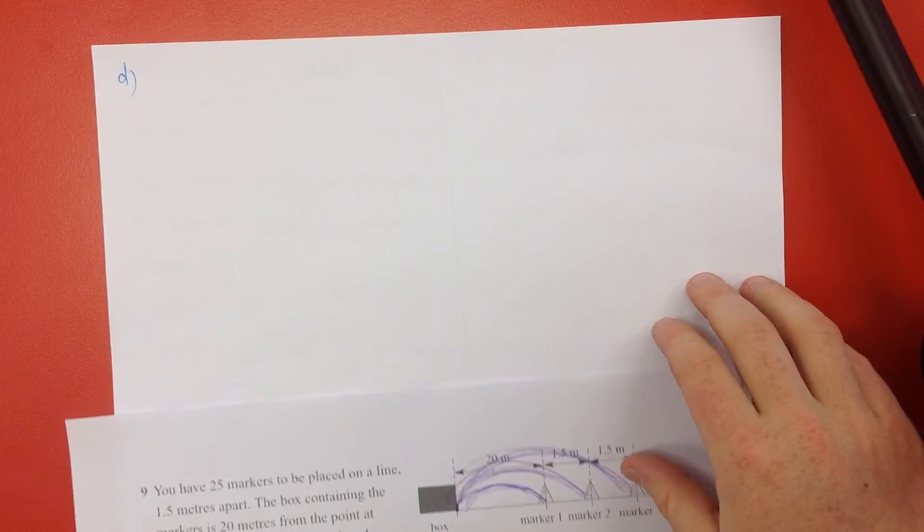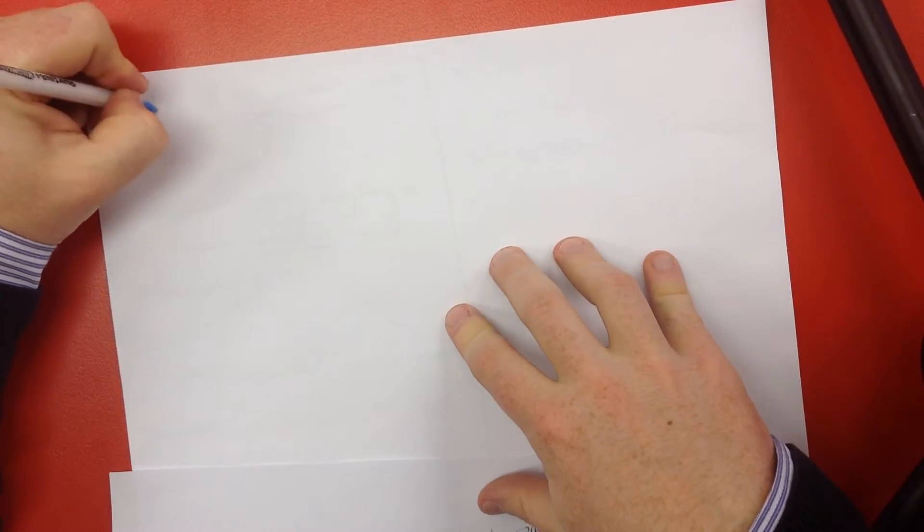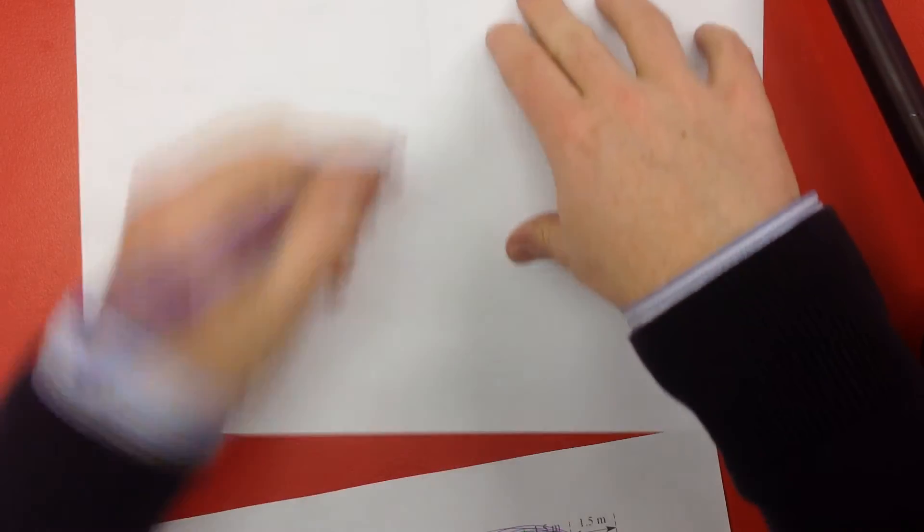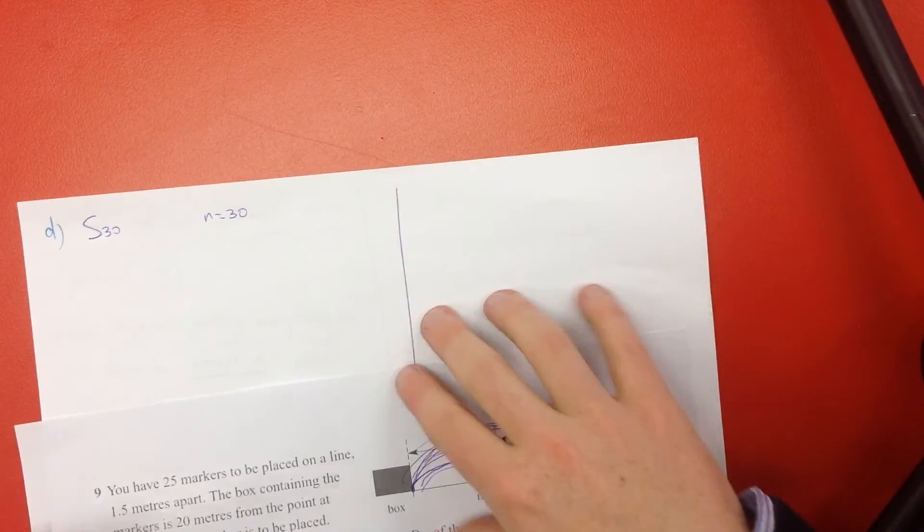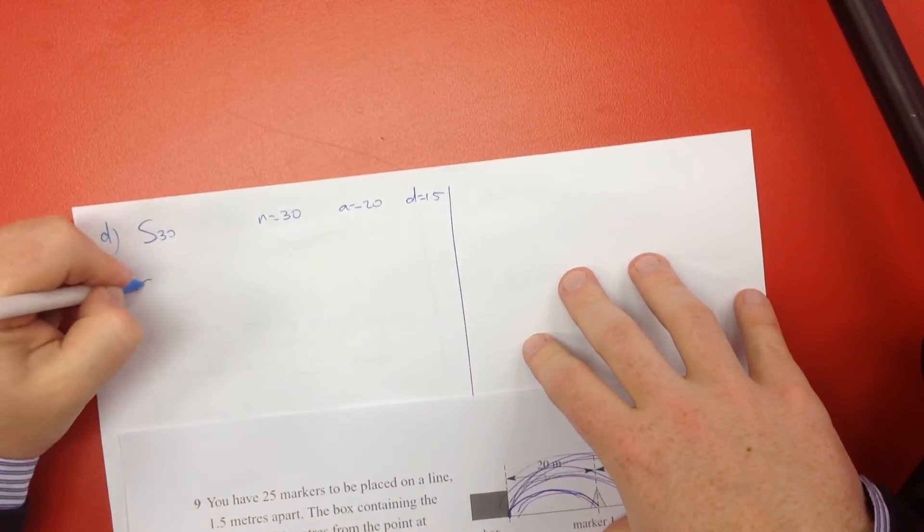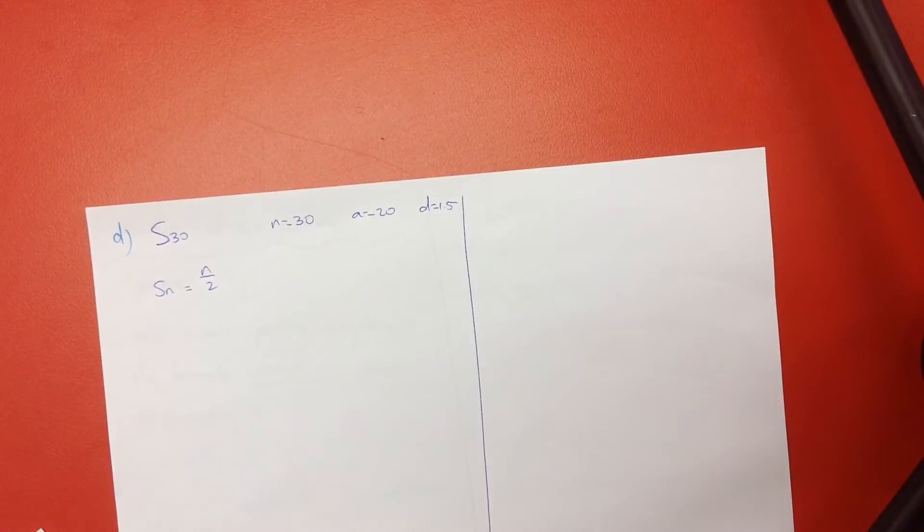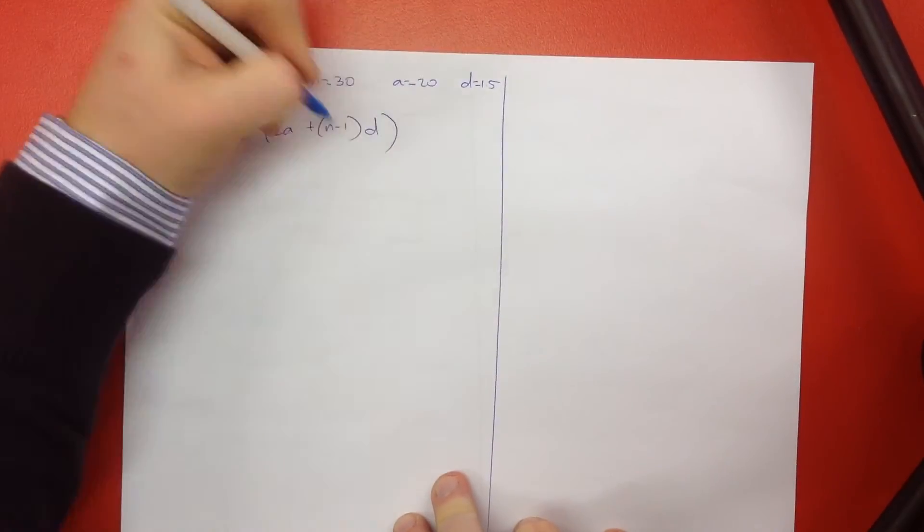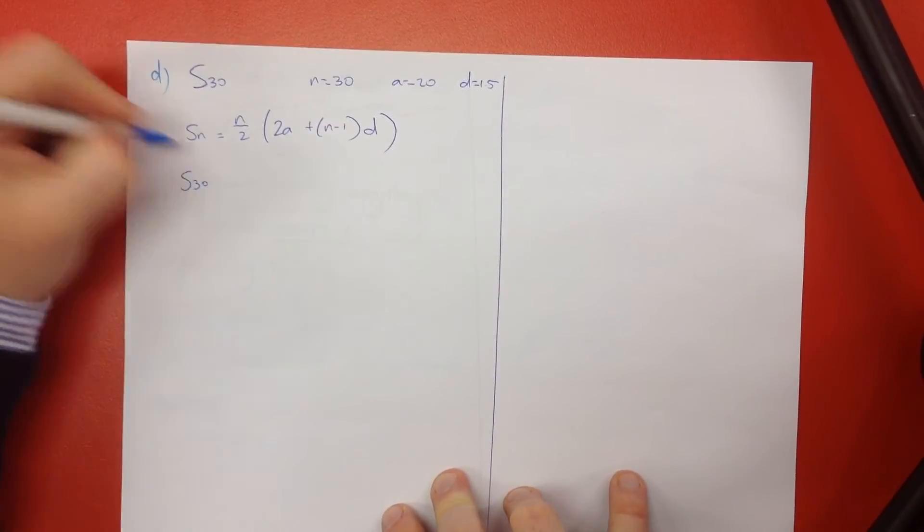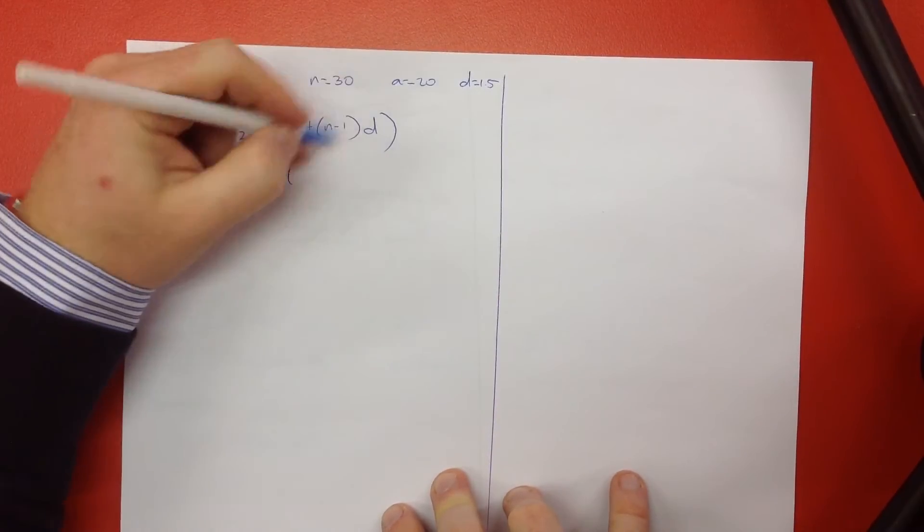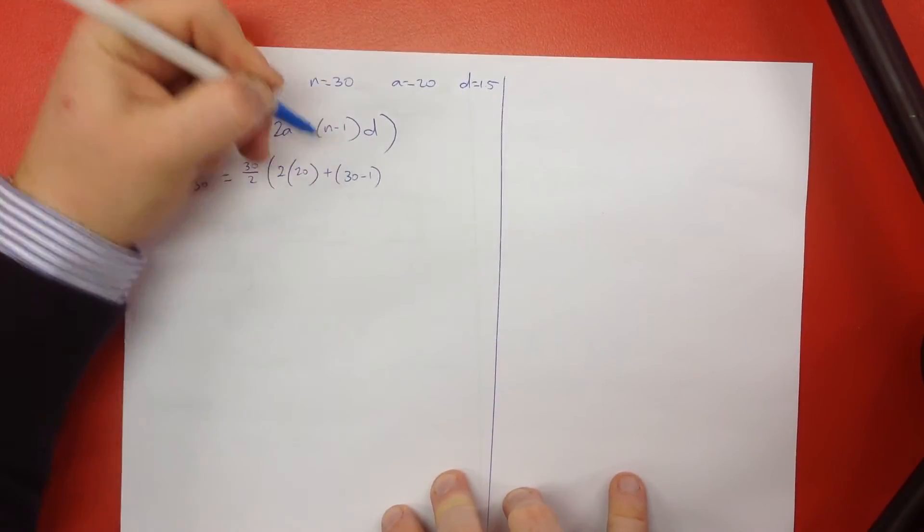Alrighty. So, we're looking for the 30 markers on the line. So let's find the sum of the first 30. So, n is 30. I'll just put my line down my page. And still, we've got our a was 20, and our d was 1.5. And do you remember our s of n rule? The sum of the first n equals n on 2, times 2a plus n minus 1 d. Just trying to find the sum of the first 30 in this case. The sum of the first 30 is 30 on 2 times 2a, a was 20, plus 30 minus 1, and the difference was 1.5.